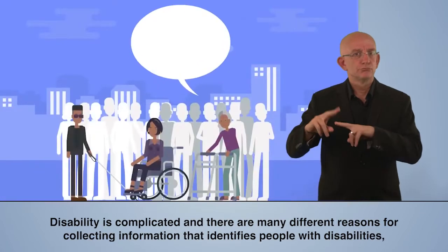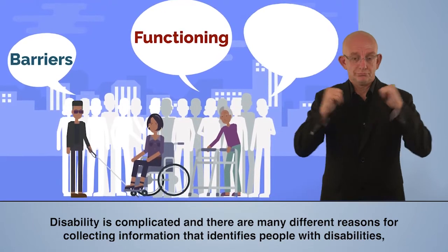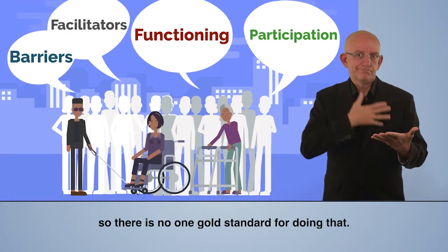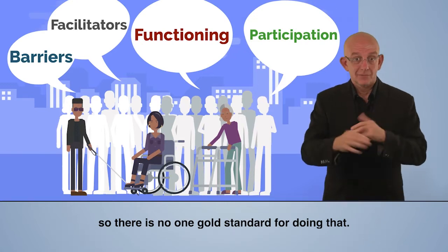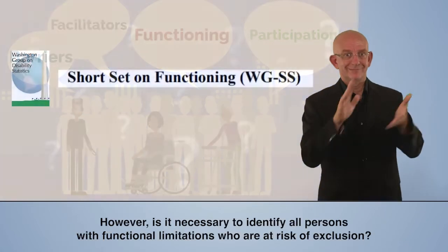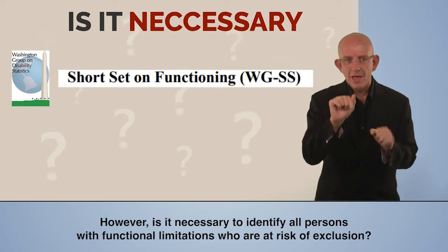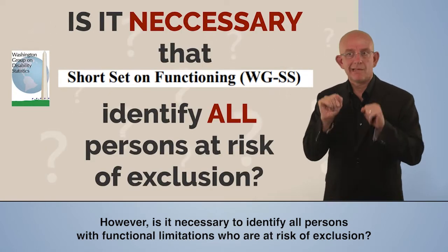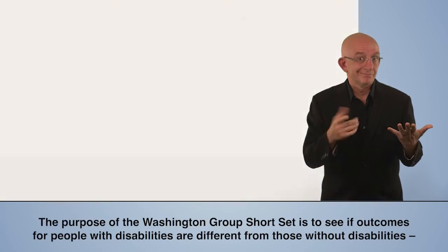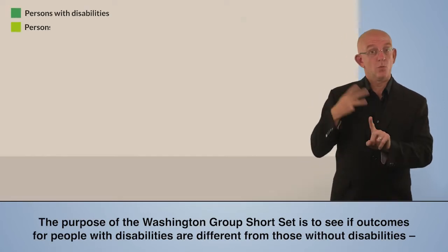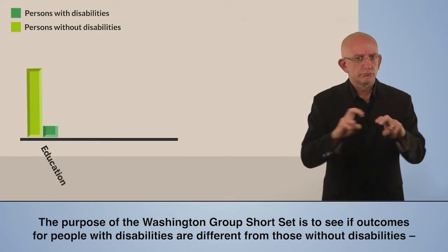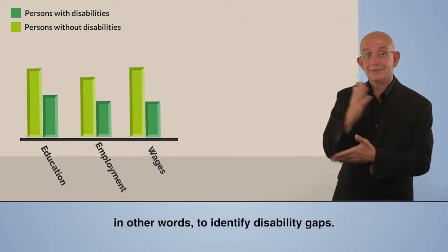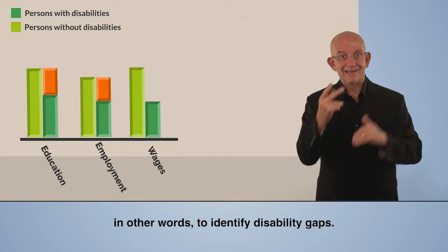Disability is complicated and there are many different reasons for collecting information that identifies people with disabilities, so there is no one gold standard for doing that. However, the purpose of the Washington Group Short Set is to see if outcomes for people with disabilities are different from those without disabilities — in other words, to identify disability gaps.